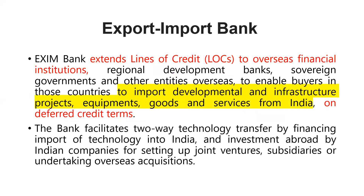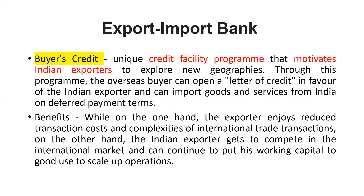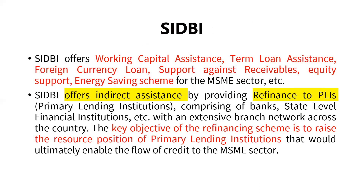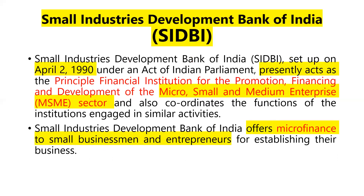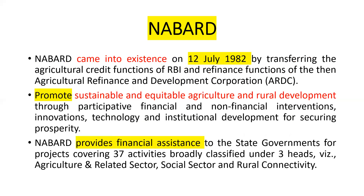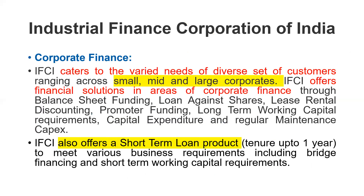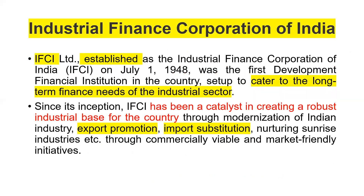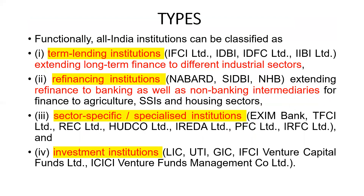In summary, we have discussed several development banks. IFCI is the first development bank in India, with major functions in project finance and corporate finance, primarily providing long-term finance to industries. NABARD focuses on agriculture and rural development, mainly through refinancing. SIDBI is focused on micro and medium enterprises with refinancing as a key function. Exim Bank is a sector-specific bank promoting export and import. Investment institutions include LIC, UTI, GIC, and ICICI Venture and Funds Management. Types of development banks include term lending, refinancing, sector-specific, and investment institutions.